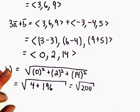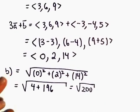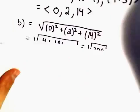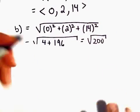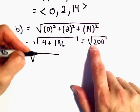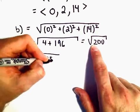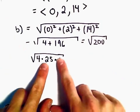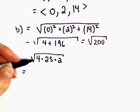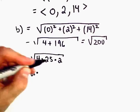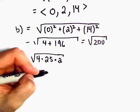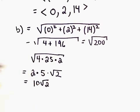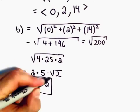And certainly we can start factoring this a little bit, simplify this just a little bit. So the square root of 200, I guess we could write the square root of 200 as 4 times 25 times 2. So 4 times 25 is 100, times 2 will be 200. Well, let's see, the square root of 4 is 2, the square root of 25 is 5, can't do much with the square root of 2. So hey, we've got 10 root 2 as the length of our vector.